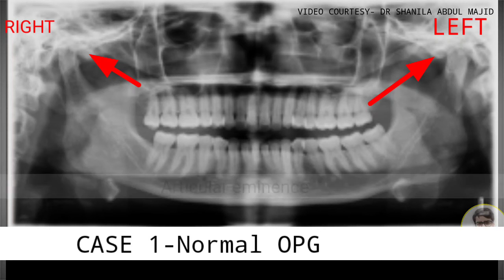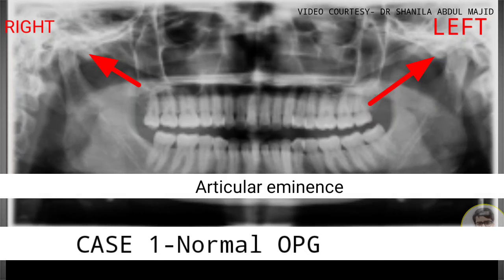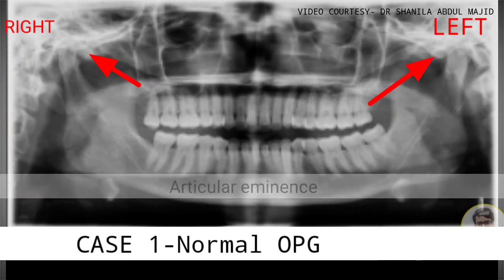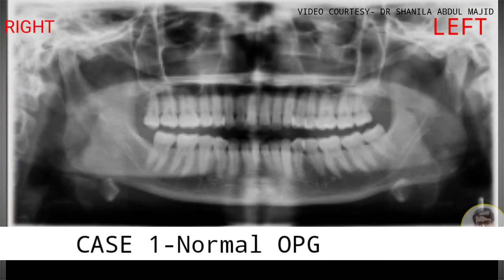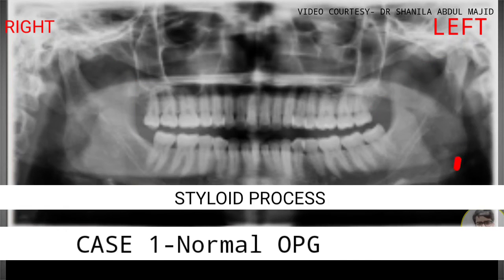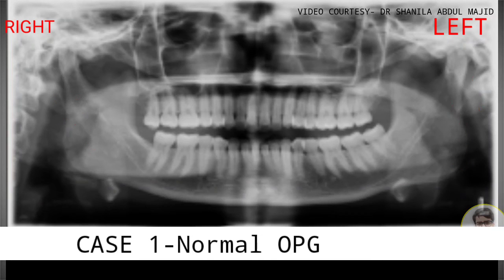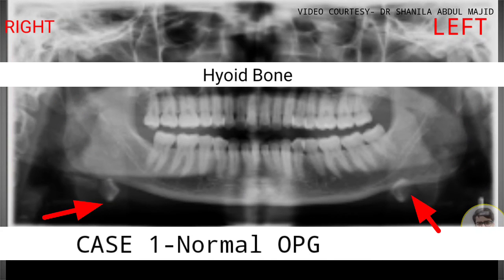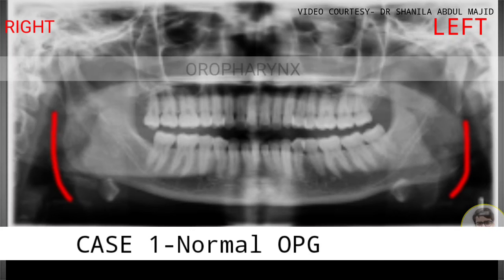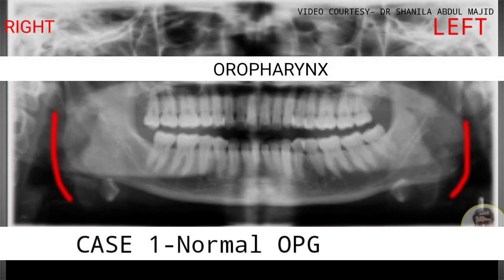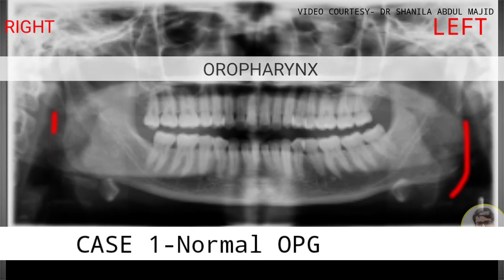On the articulating surface of the head of the condyle, you can see anterior to that is the articular eminence. This should be noted in cases of TMJ — we have to see the head of the condyle as well as the articular eminence. This is followed by the styloid process, the hyoid bone, and then the radiolucent structure that we see is the pharynx — that's the oropharynx region.